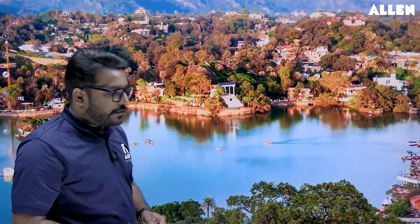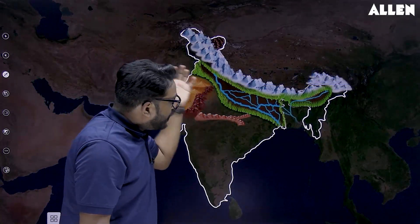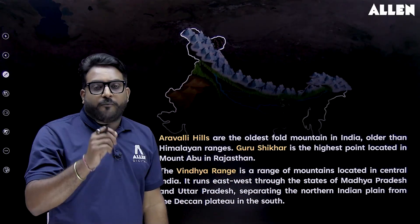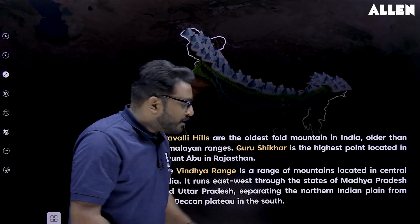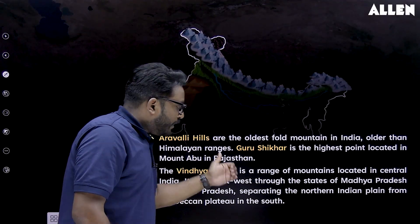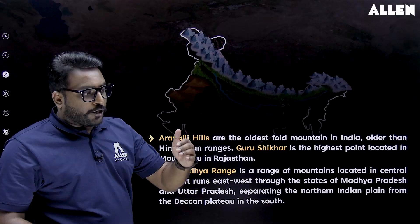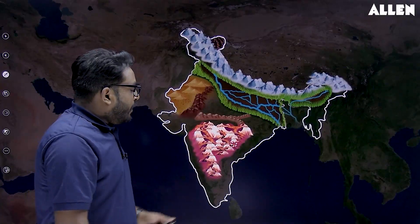The Aravalli ranges are among the oldest in the world, formed before the emergence of the Northern Himalayas. Their highest point is Guru Shikhar, located at Mount Abu in Rajasthan. The Vindhyachal ranges are located in central India, running east-west through Madhya Pradesh and Uttar Pradesh, and they separate the Northern Indian Plains in the north from the Deccan Plateau in the south.